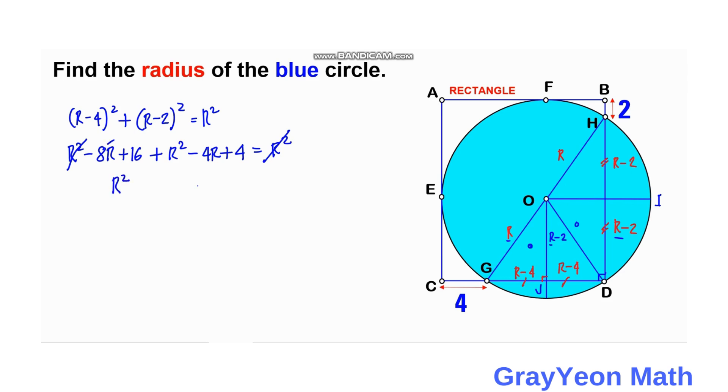And we can simply cancel this R squared, and we are left with this R squared. Then we combine this negative 8 and negative 4, so we have negative 12R, and we combine this 16 and 4, so we have plus 20 is equal to 0.